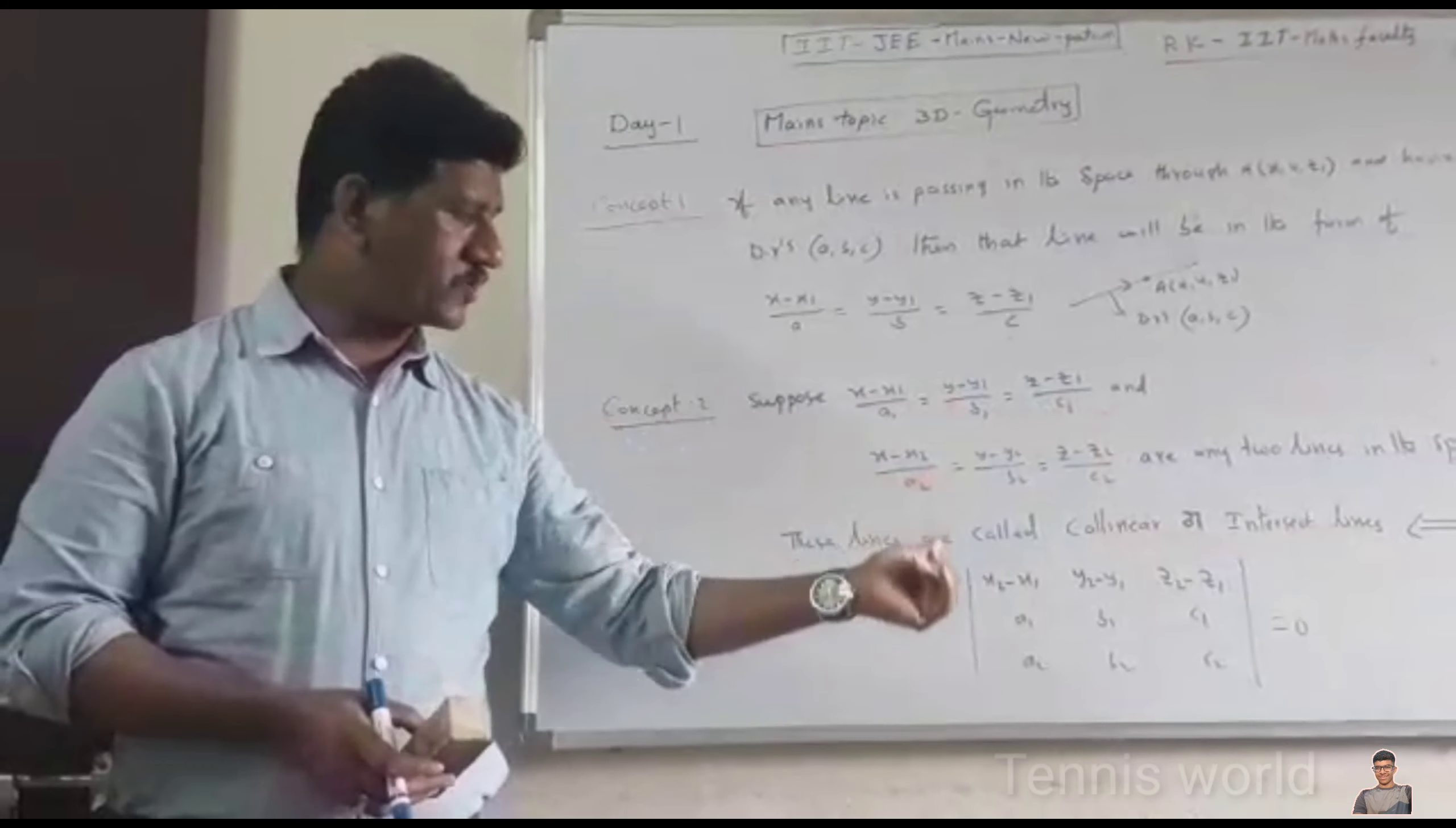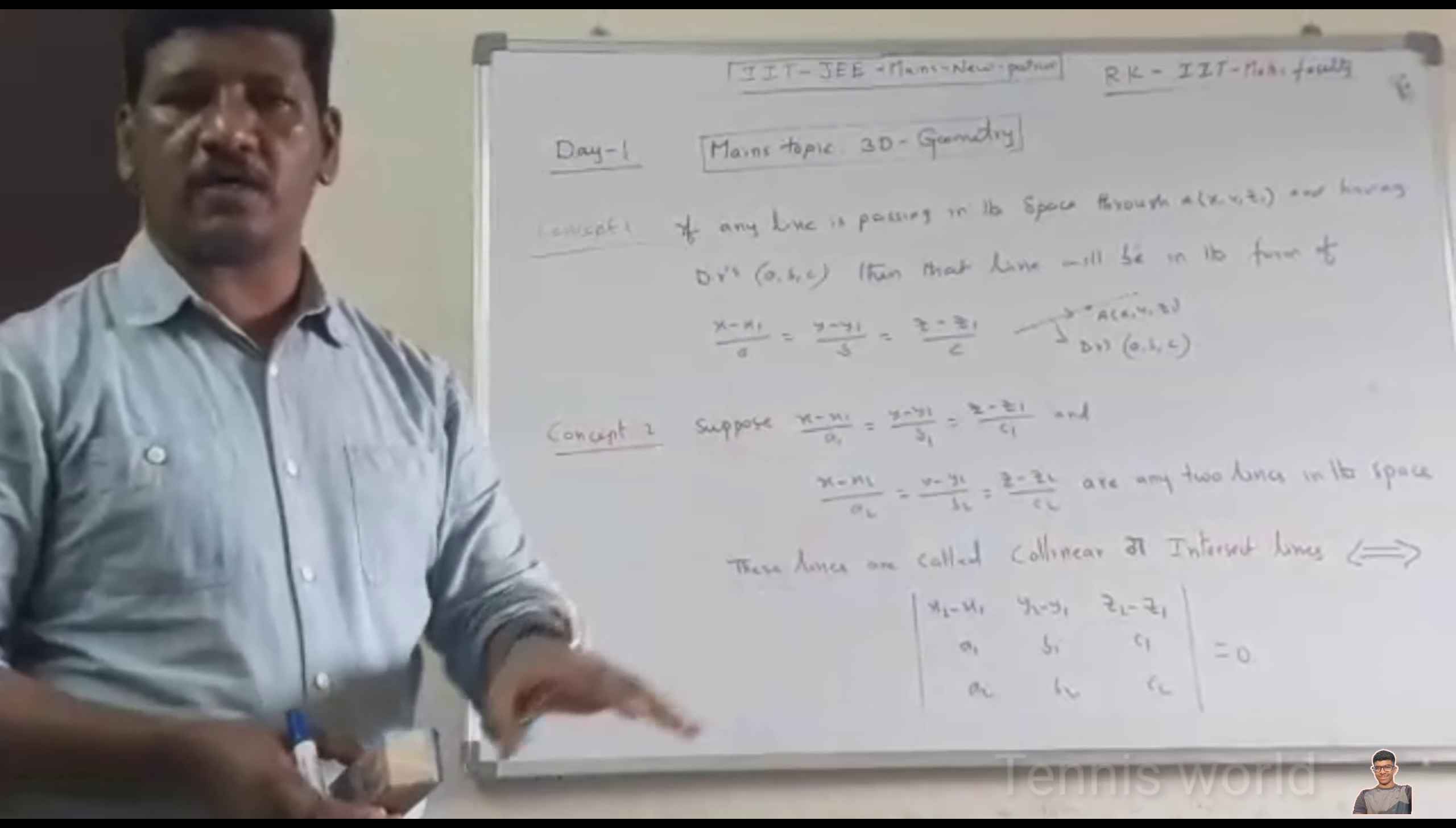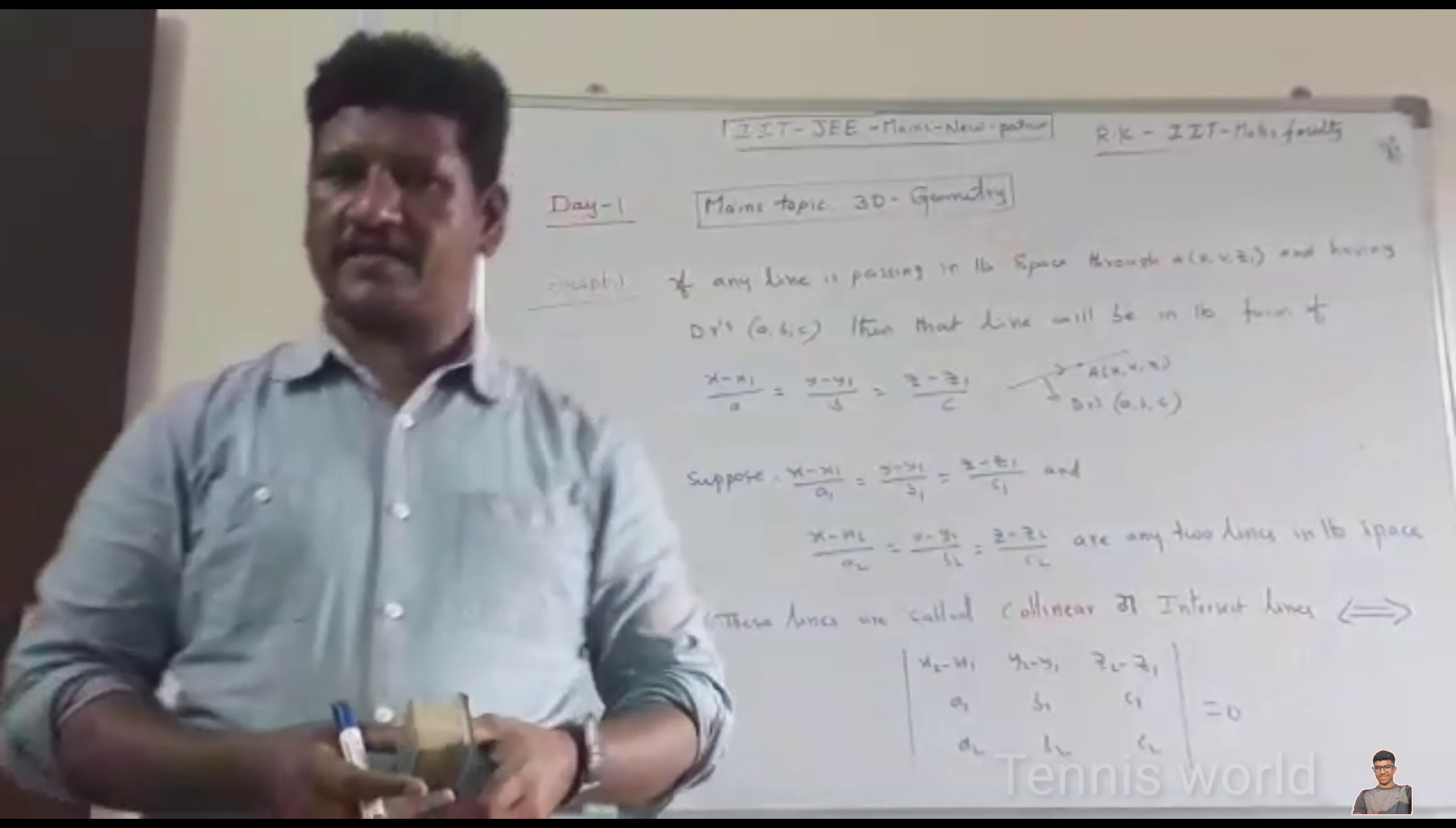What is the condition? First row: X2-X1, Y2-Y1, Z2-Z1. Second row: first line DRs A1, B1, C1. Third row: second line DRs A2, B2, C2. Whenever you find out the determinant for these three rows, if we get answer 0, then we can say that these two 3D lines are called intersecting lines, also called as coplanar lines.